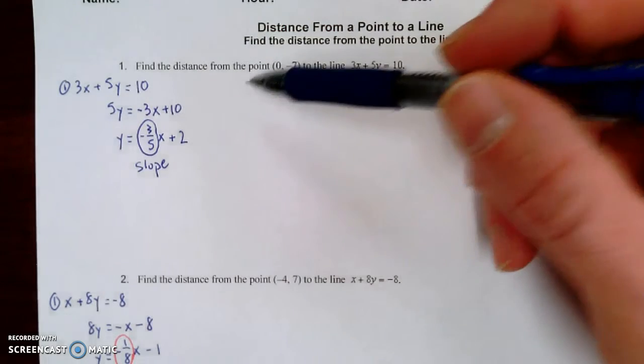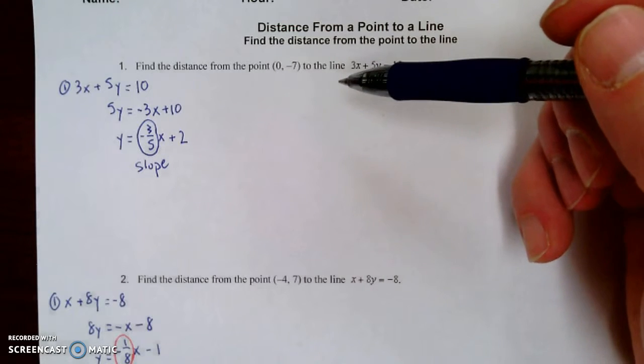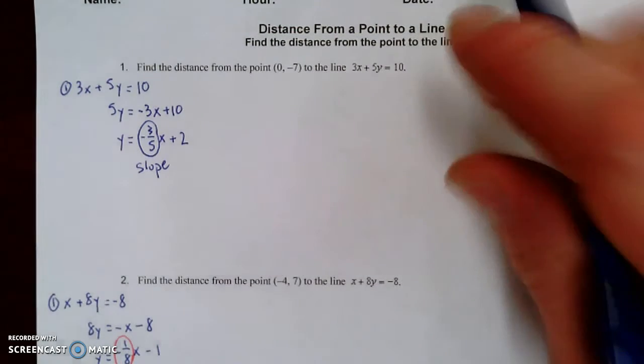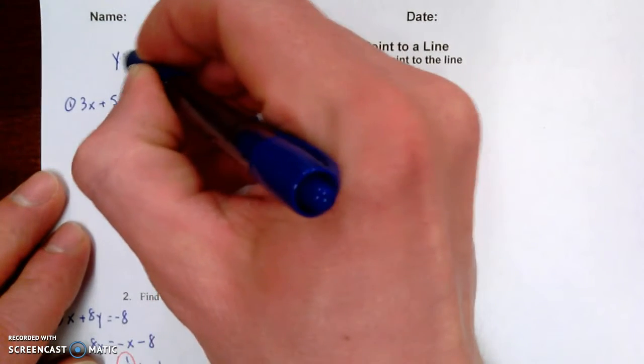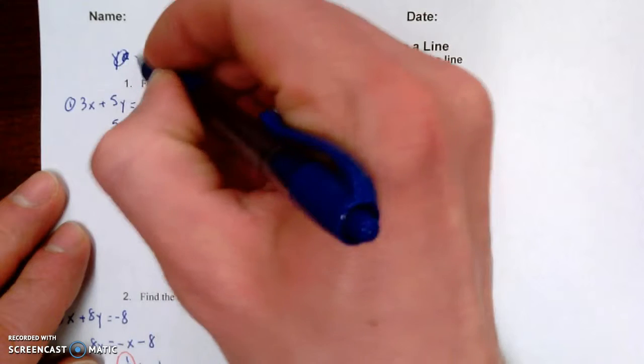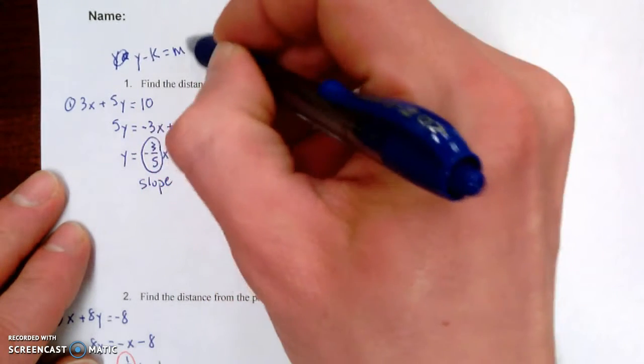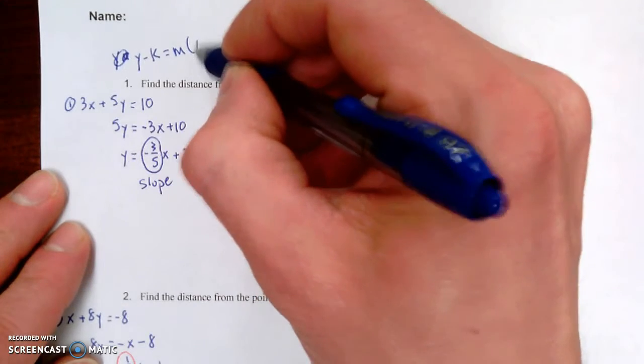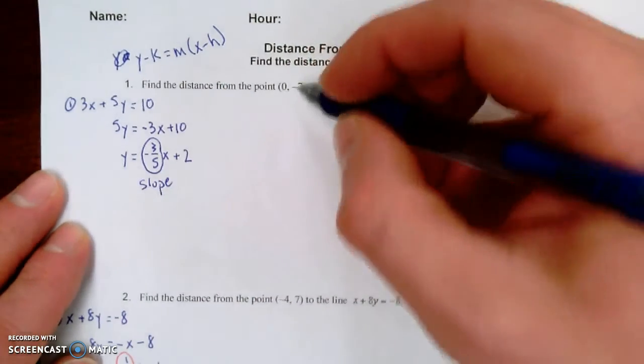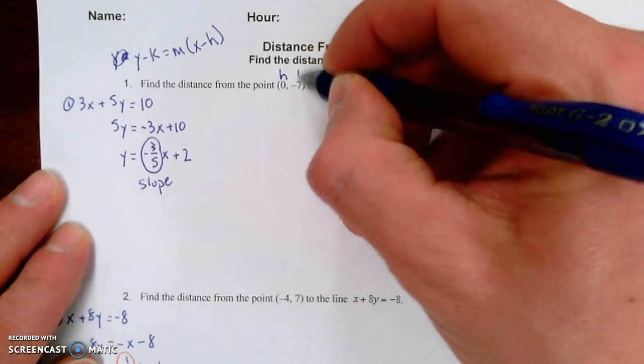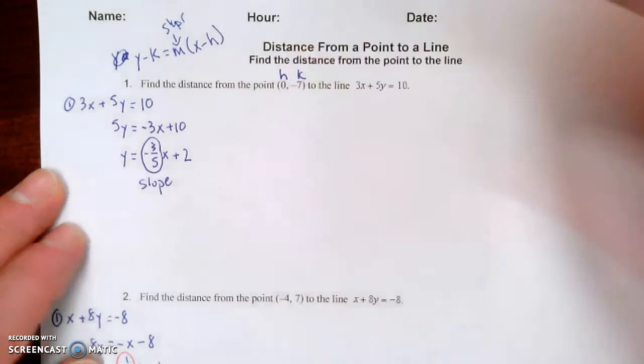We're going to write the point-slope equation of the perpendicular line, and then we're also going to rewrite it in slope-intercept form. So if you recall, point-slope form is y minus k equals m(x minus h), where our point is (h, k), and m is our slope.